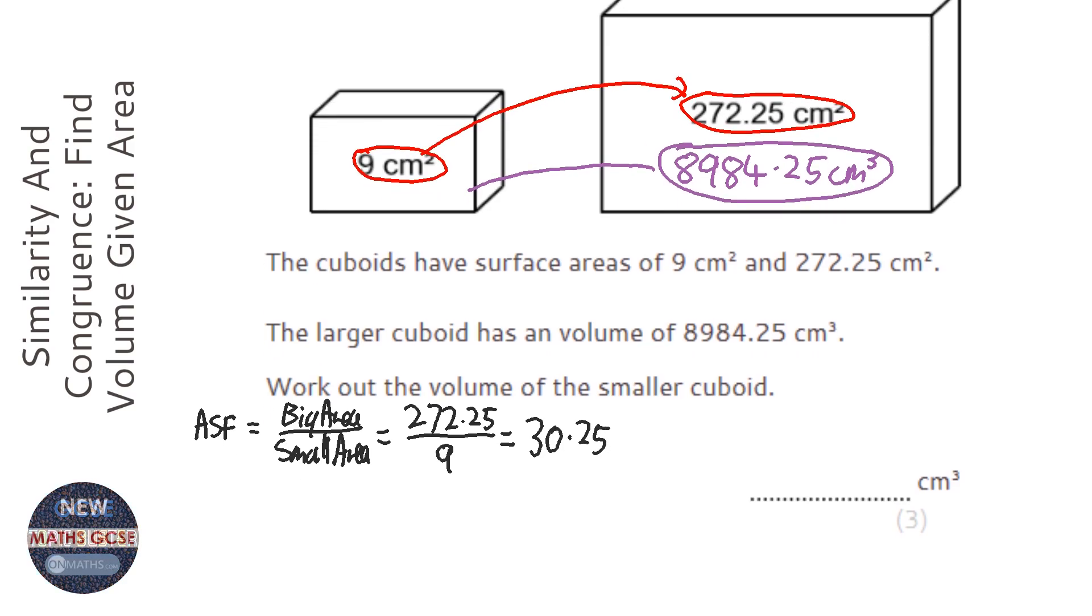Now, there's no real way of going straight to the volume scale factor, which clearly we need for this question, so what I'm going to do is work out the linear scale factor. We don't have any lines in this question, so we won't use it directly, but it will help us work out what the volume scale factor is. So we get that by square rooting the area scale factor. Okay, so I'm going to square root 30.25, and it's 5.5.